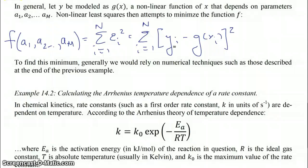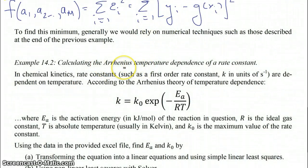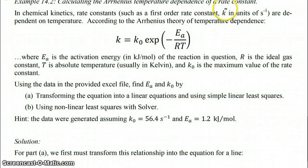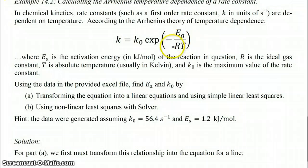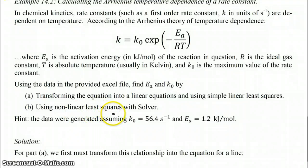Let's look at a simple example: calculating the Arrhenius temperature dependence of a rate constant — this is example 14.2. In chemical kinetics, rate constants like the first-order rate constant k (in units of inverse seconds) are not truly constant because they depend on temperature. According to Arrhenius theory, k ≈ k₀ · exp(−E_a / RT), where R is the ideal gas constant, T is temperature in Kelvin, and E_a is the activation energy of the reaction. We'll find E_a and k₀ using two methods.